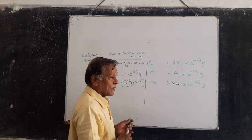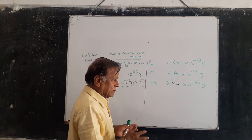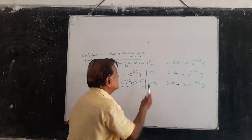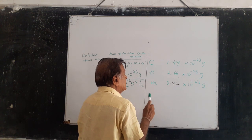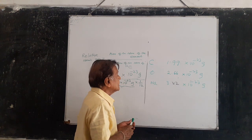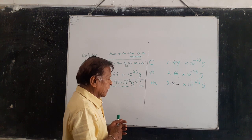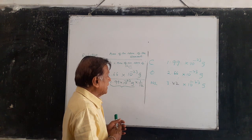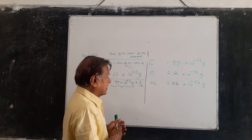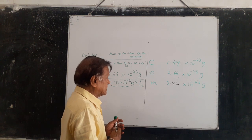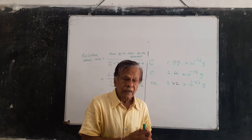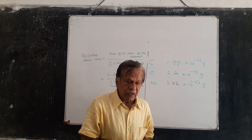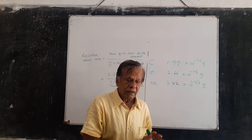If you express the masses of atoms of different elements in grams, I will give you some examples. Mass of an atom of carbon: 1.99 × 10⁻²³ grams. Mass of an atom of oxygen: 2.66 × 10⁻²³ grams. Mass of an atom of sodium: 3.82 × 10⁻²³ grams. These are very small values — you can't use these in calculations. That is why we need relative atomic masses and relative molecular masses.